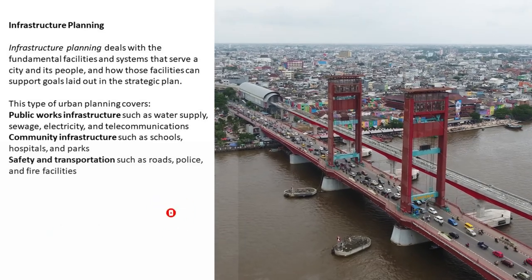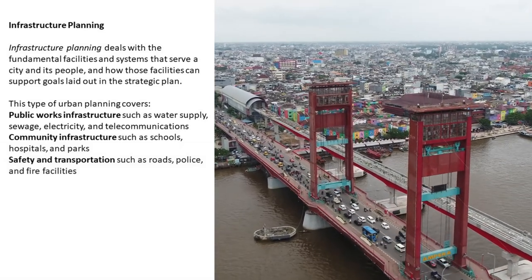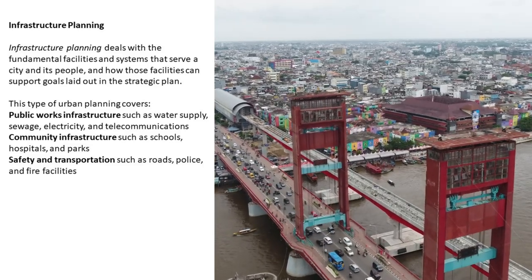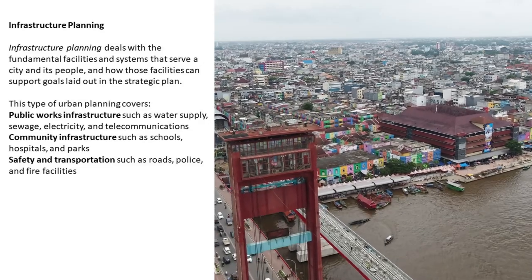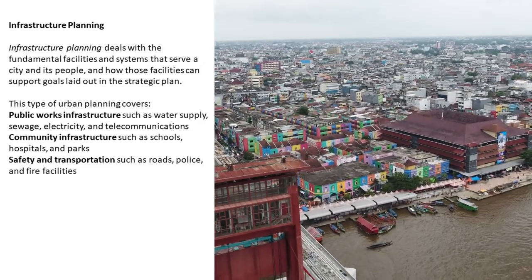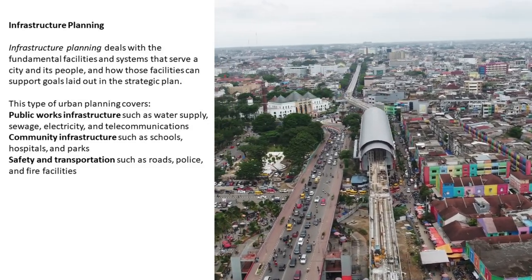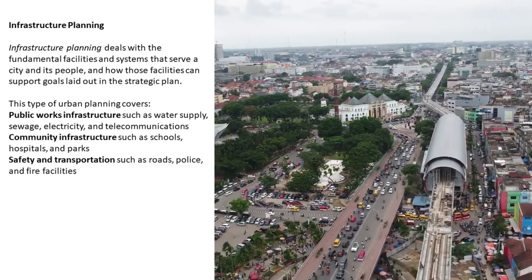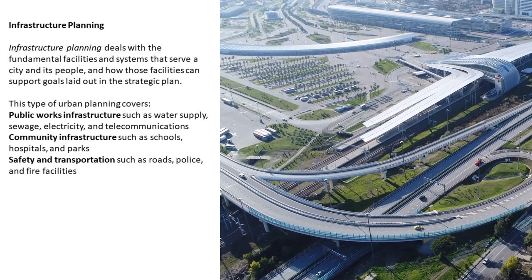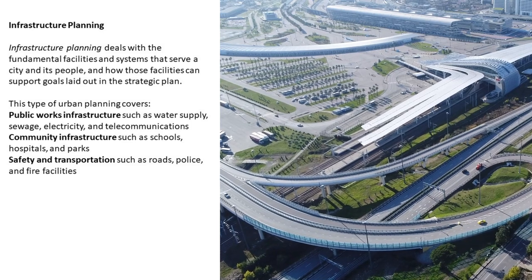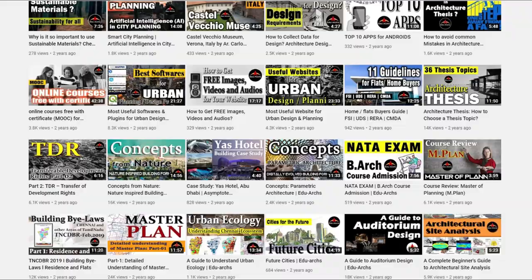Infrastructure planning deals with the fundamental facilities and systems that serve a city and its people, and how those facilities can support goals laid out in the strategic plan. This type of urban planning covers public works infrastructure such as water supply, sewage, electricity, and telecommunications; community infrastructure such as schools, hospitals, and parks; and safety and transportation such as roads, police, and fire facilities.